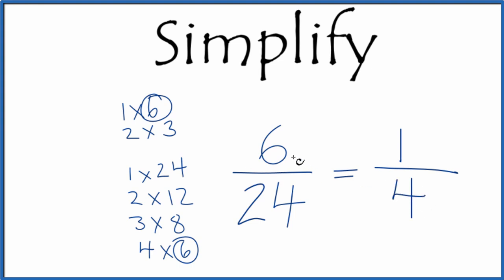We've reduced the fraction 6/24 down to 1/4. We can't reduce this any further. If you divide 6 by 24 or 1 by 4, you'll get the same answer, 0.25.